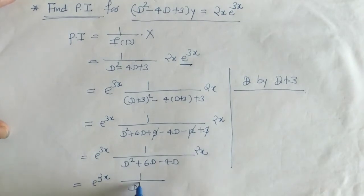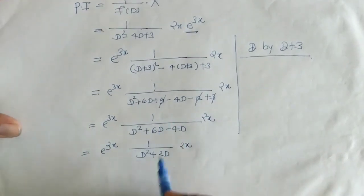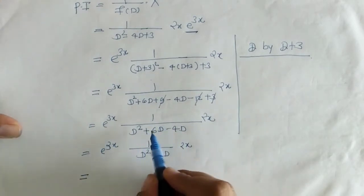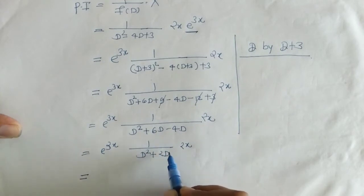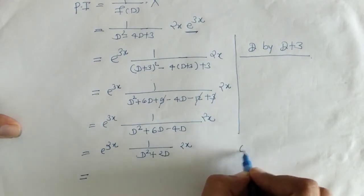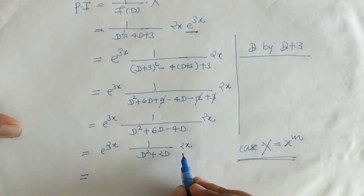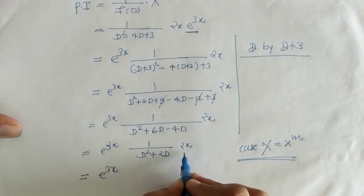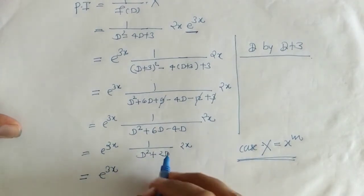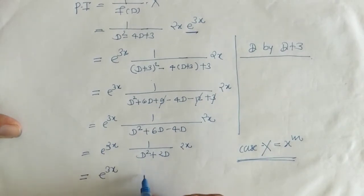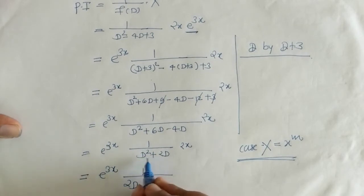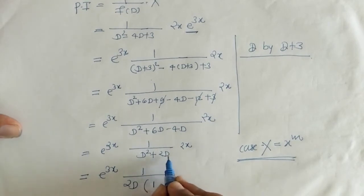On simplification we got this one. Now we can check that we have 1 upon f of D and we have to operate this on 2x. This is the case of x raised to m. In this case we have to take the 2D outside of f of D so that we can express f of D as 1 plus phi of D. Here the lowest degree term is 2D, so we take that outside.